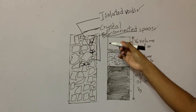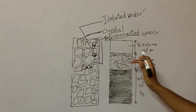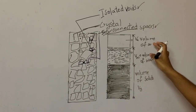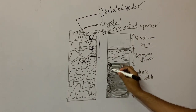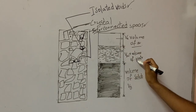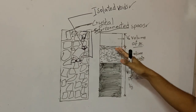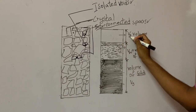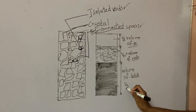Interconnected voids allow liquid to flow through the rock. Now here you can see this diagram. This diagram represents the three phases: the solid phase, water phase, and air phase present within the rock. You can see a certain volume of a rock is occupied by solids, some volume is occupied by water, and some volume is occupied by air. VA represents the volume of air, VW represents the volume of water, and VS represents the volume of solid.